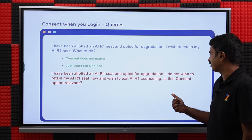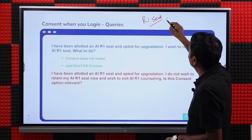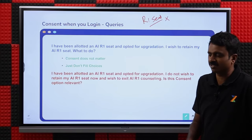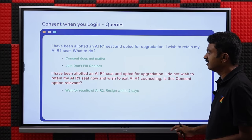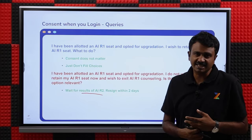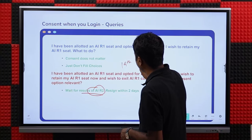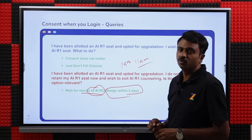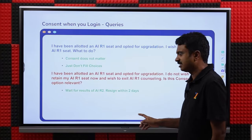If you were allotted an R1 seat, opted for upgradation, and do not wish to retain your seat — perhaps you wanted to resign but missed the resignation deadline — consent and choice filling are not relevant for resignation. Don't fill choices. Wait for the results of All India R2. After the 19th 11 AM deadline, you cannot resign directly. You will have to wait for R2 results and can resign within the exit-without-forfeiture window. Consent or choice filling is not required for resignation.